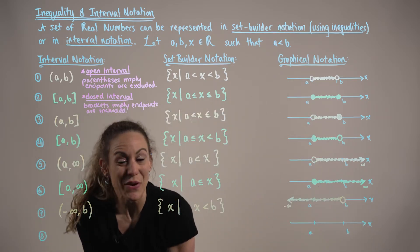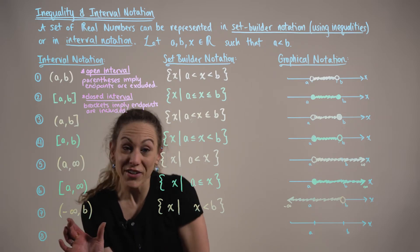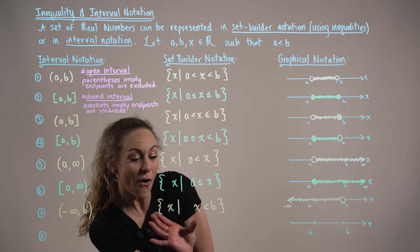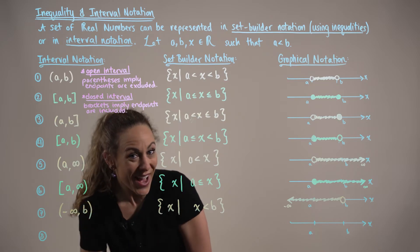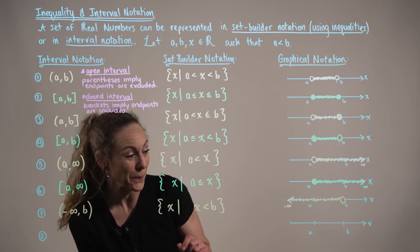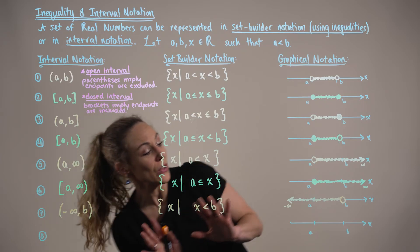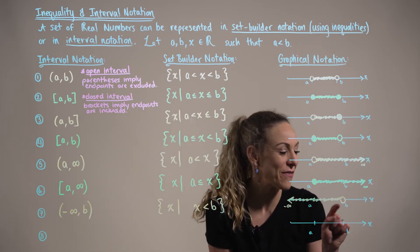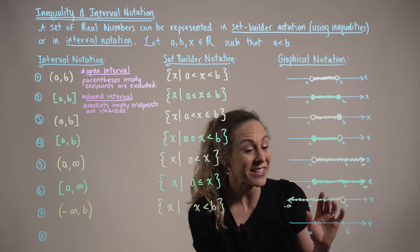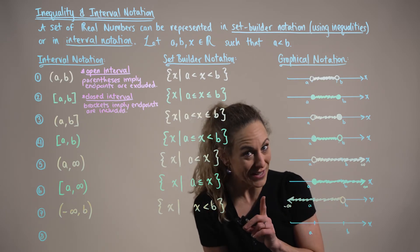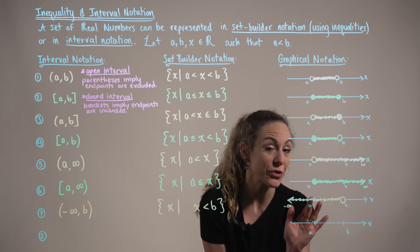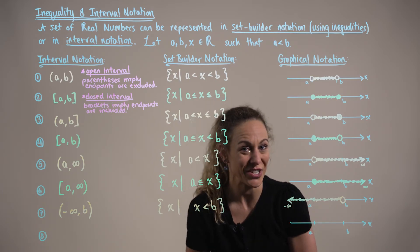In case seven we have another infinite interval: the set of all real numbers x such that x is strictly less than endpoint b. Looking at our graph, we have an open dot at endpoint b, implying x can get infinitely close but never equal this endpoint, and we shade the region growing in an infinitely negative direction.